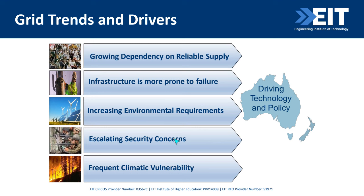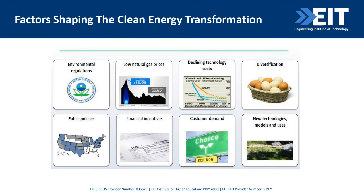Security concerns are rampant — you're having IT issues, cyber security problems. Climate vulnerability, whether El Niño effect or others, is becoming very difficult to manage. Climate change is happening, and you will find environmental regulations, declining technology costs, diversification, changing public policies, financial incentives, customer demand, and new technology models being used constantly.